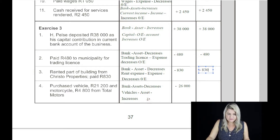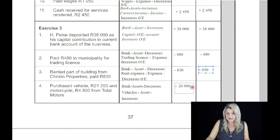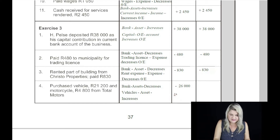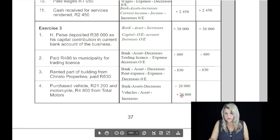Purchased a motor vehicle — a vehicle for 20,200 Rand and a motorcycle for 4,800 Rand from Total Motors. It's a cash transaction, so the bank is an asset and it decreases. Vehicle is an asset which increases. We've paid 26,000 Rand from the bank account, so it decreases. And the other asset increases by 26,000 Rand. The overall effect is zero because we've swapped one asset for the other asset.